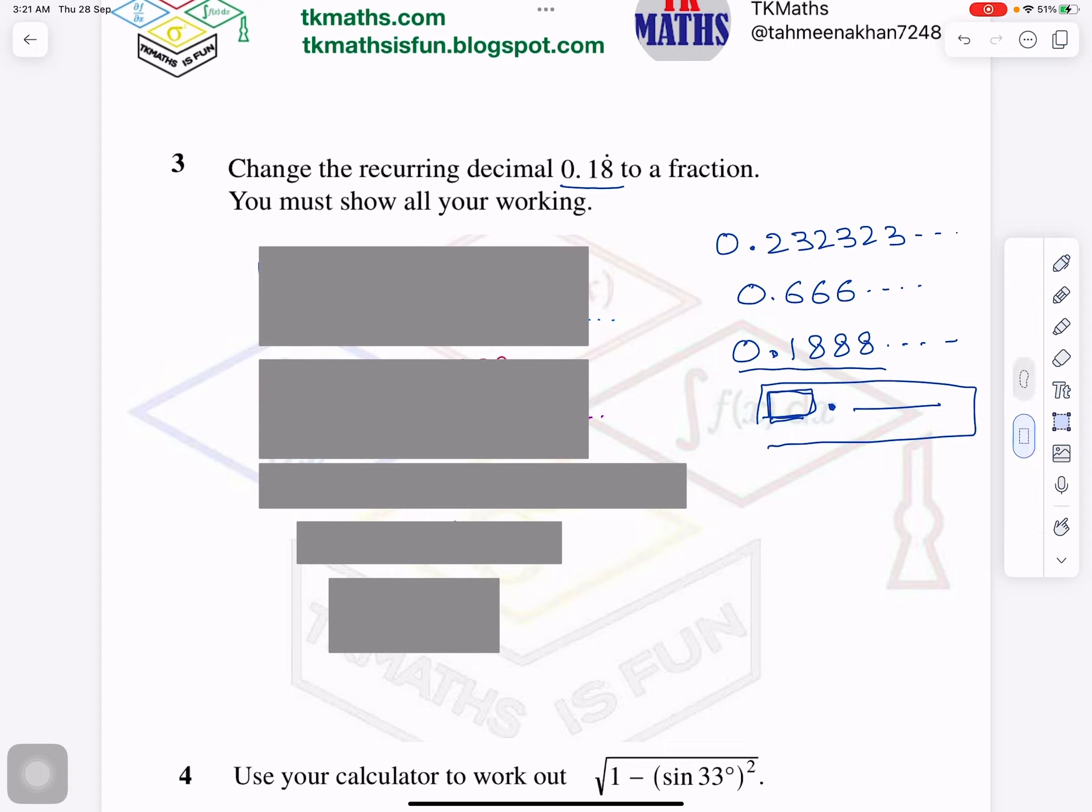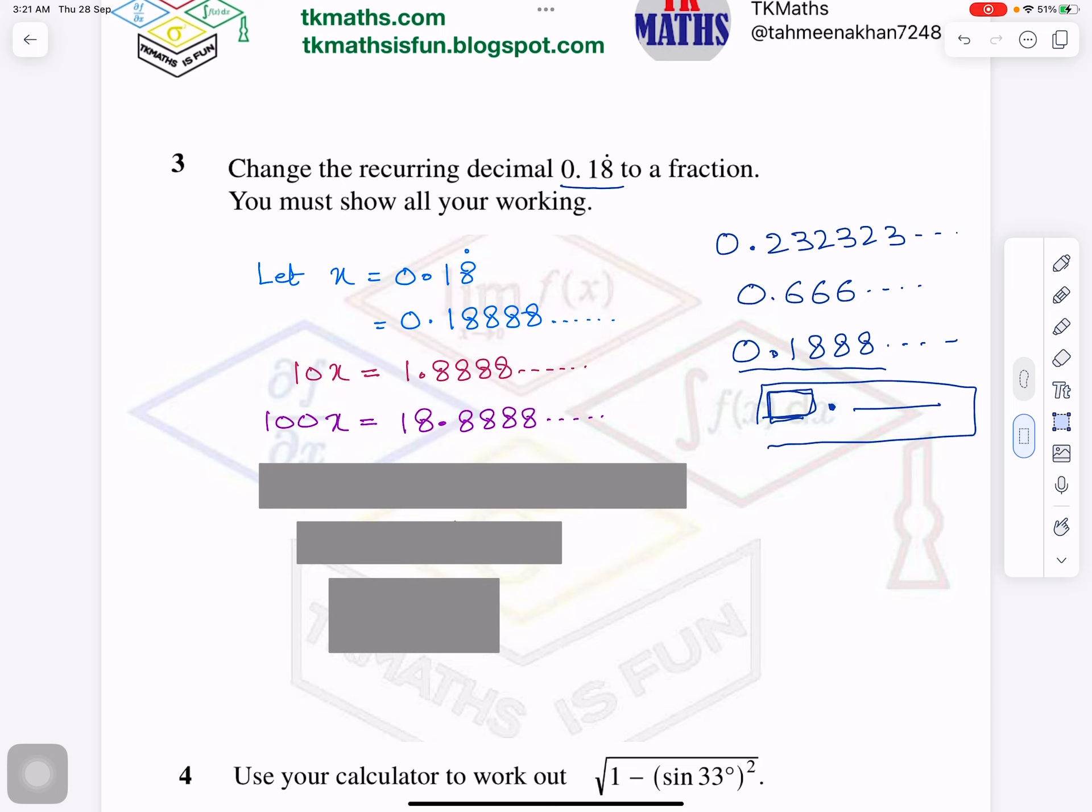So first of all I will say that let's suppose x is equal to 0.1888888. After this assumption, what I will do now, I will multiply it by 10x and 100x. Now why I am doing this? Always think about why. Then you will understand it better.